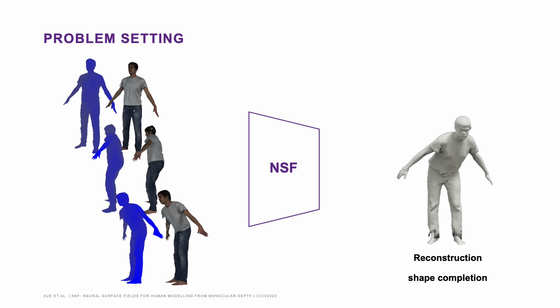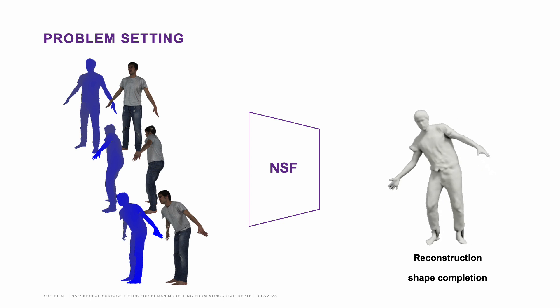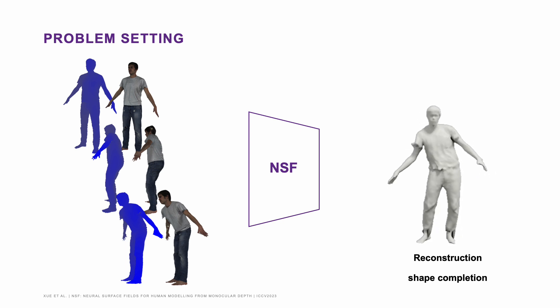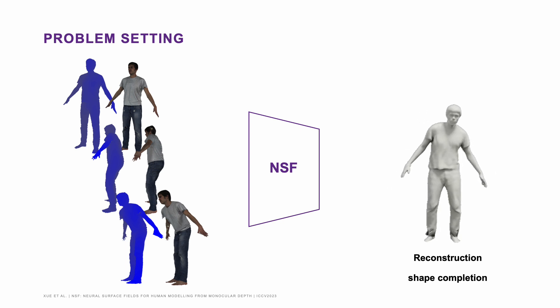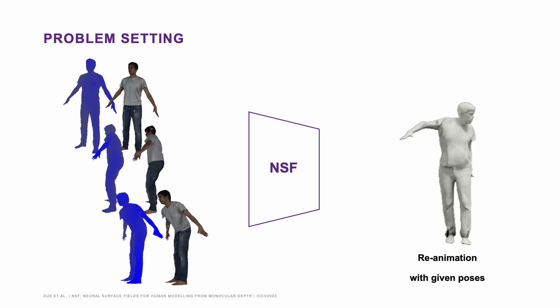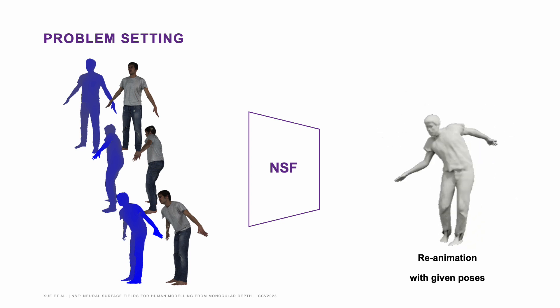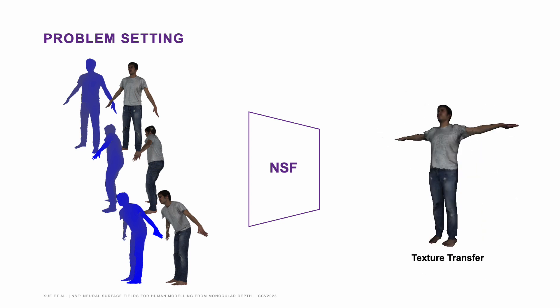Given a set of monocular depth frames, our NSF learns a human model which can be used to complete the partial depth point clouds or to be used to reanimate with desired poses. Moreover, NSF can also transfer texture from RGB images if they are available.